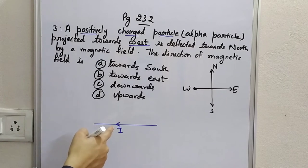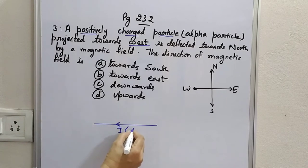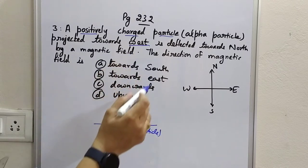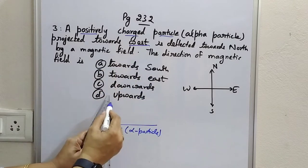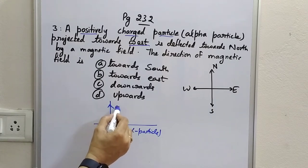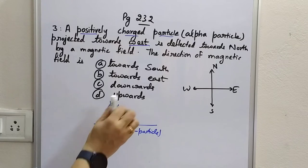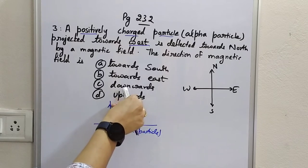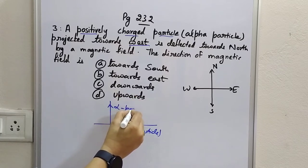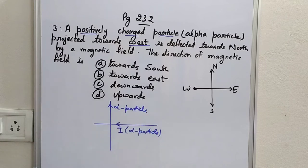The alpha particle is deflected towards north by a magnetic field. So this positively charged alpha particle is deflected towards north. This becomes the direction of the alpha particle, and we are supposed to find the direction of the magnetic field.